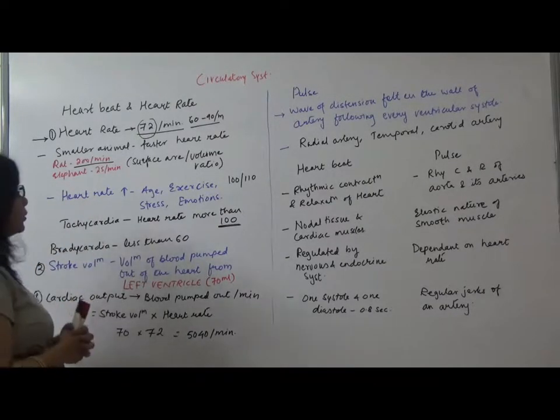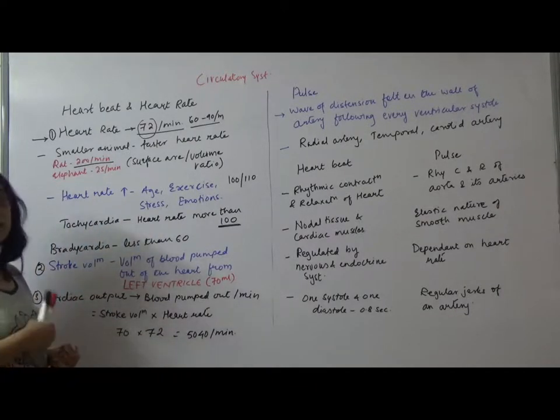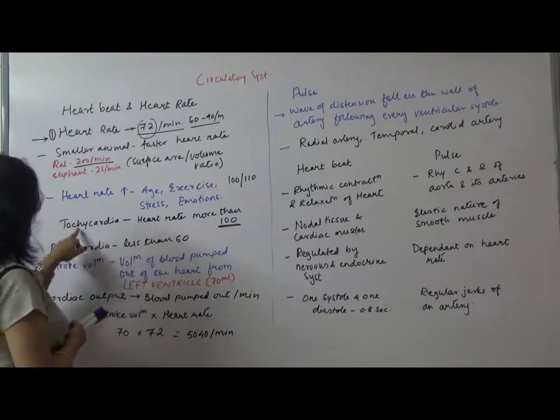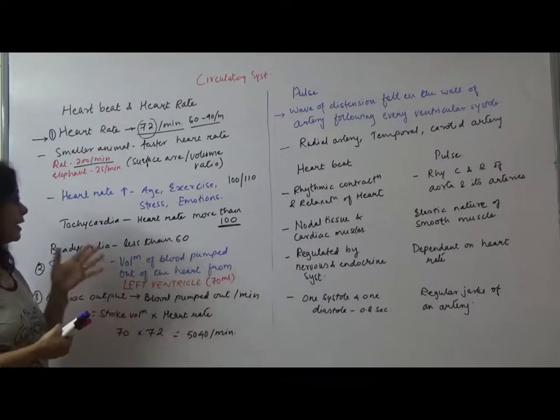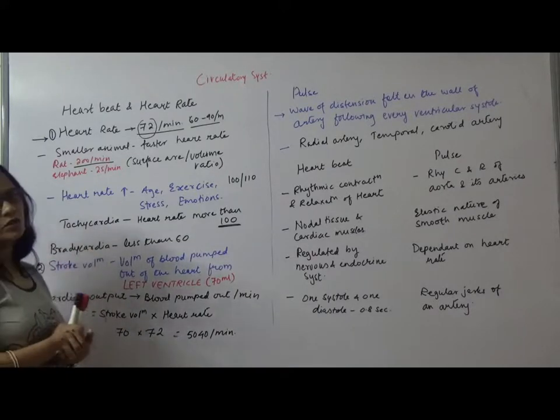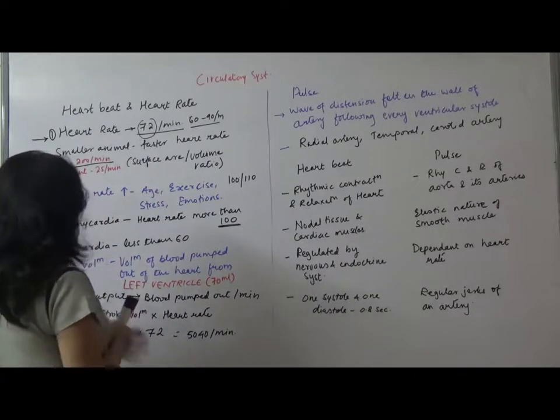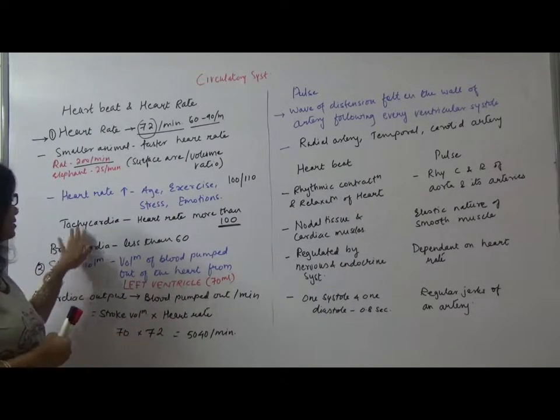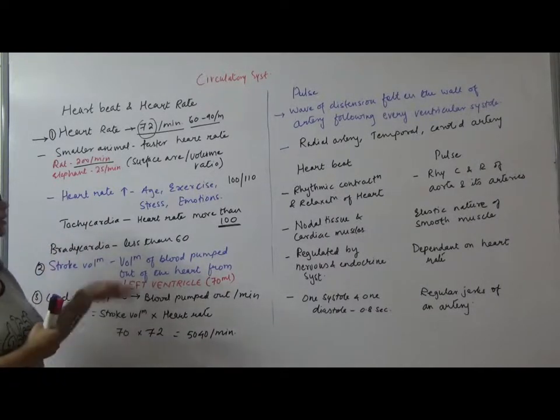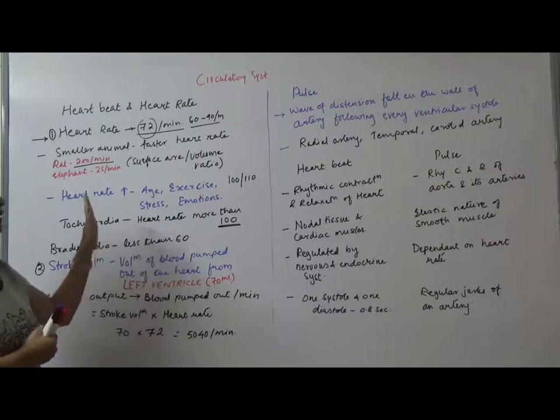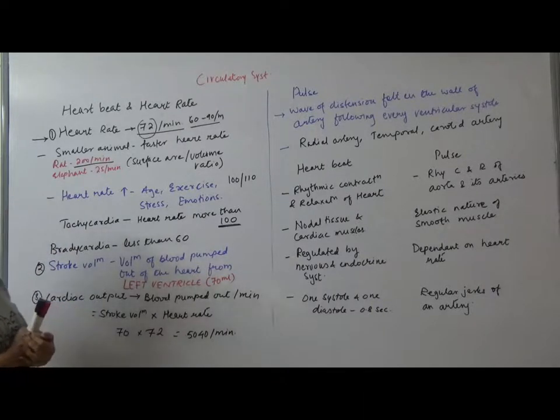Tachycardia - in case of adults, when heart rate is more than 100, it is called tachycardia. Oppositely there is bradycardia, where the heart rate is less than 60.